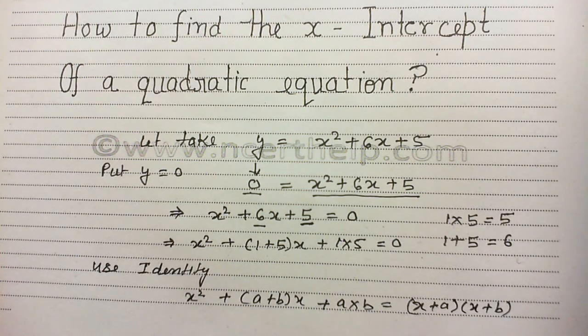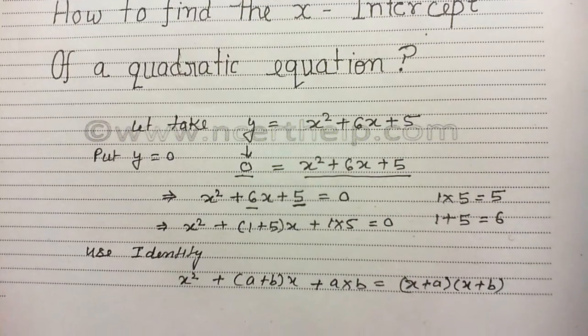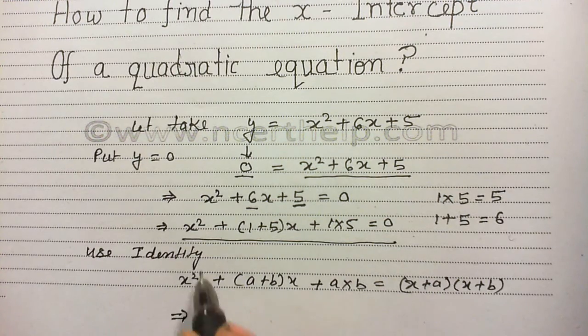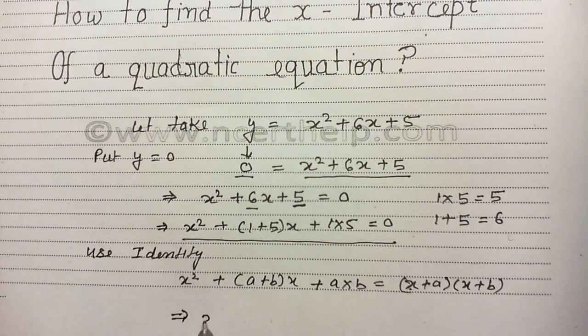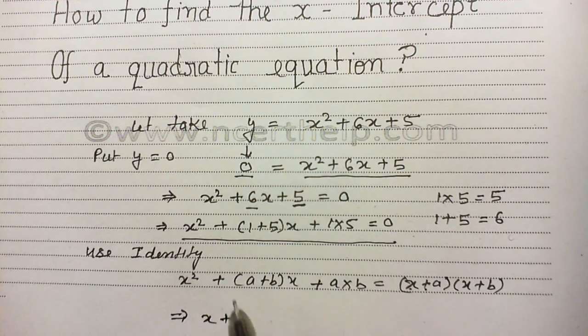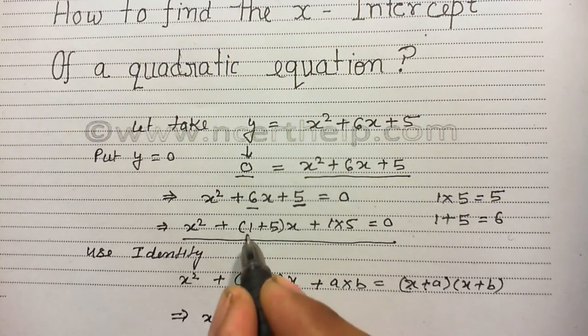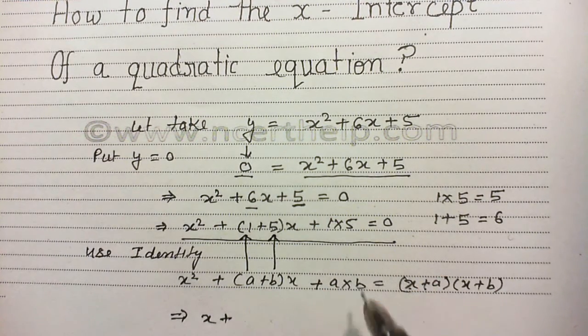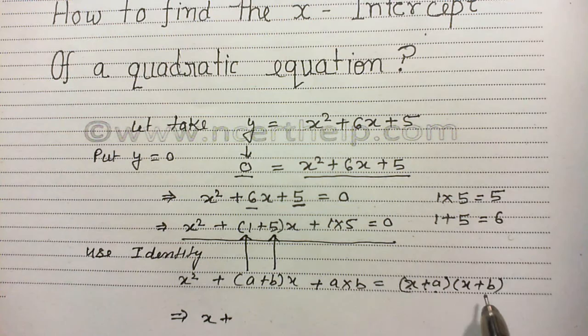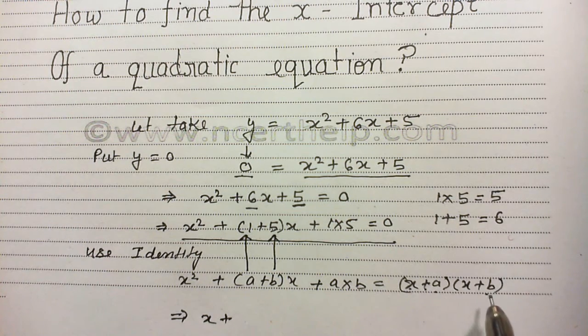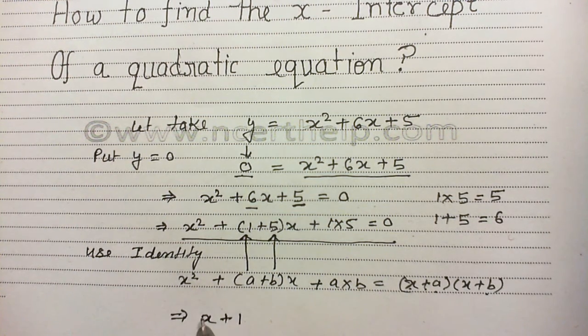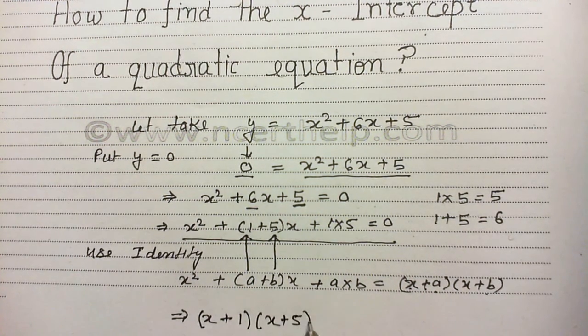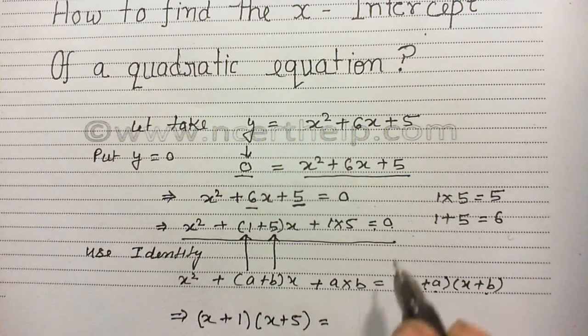Using this identity, I can write that the factor of this given equation will be x plus, what is the value of a? You can see here, the value of a is 1 and value of b is 5. So I can replace this a and b by 1 and 5 and I will get x plus 1 and x plus 5 equals 0.